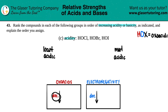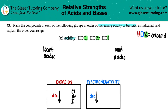The oxo acid trend is that as you go down a group, acidity decreases — the most acidic is at the top. When ranking these, you don't rank the hydrogen or oxygen since they're all the same; you rank the variable element X. That would be chlorine, bromine, and iodine — chlorine is at the top of the group, then bromine, then iodine.